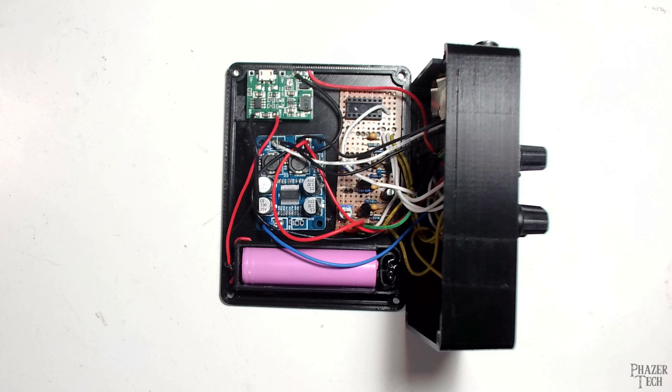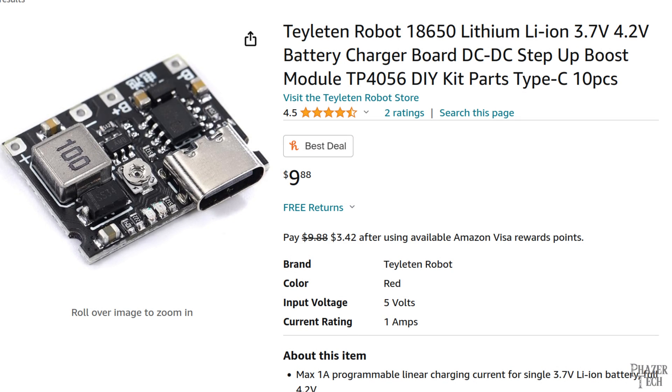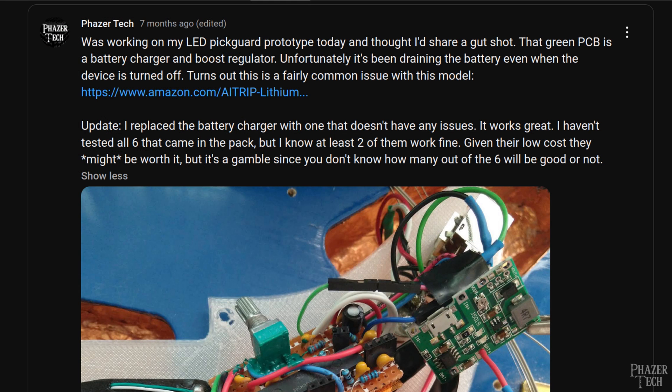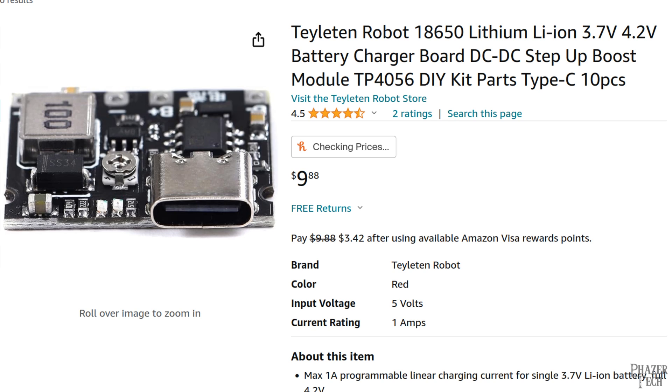Now you might have noticed the module I'm using is green, while the one I just showed on Amazon is black. This one is the updated version and seems to be better quality than the older model which has quality control issues. If you get the old version you can expect only about half of them to work correctly, so I recommend avoiding them. I actually made a post about this several months ago since I've used this module in a few different projects.